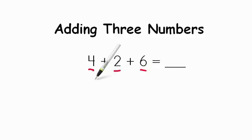So the first way we're going to do it is we're going to count on to add. So we're going to add the first two and then the last one. So if we add four plus two we start with four, five, six. The answer is six.